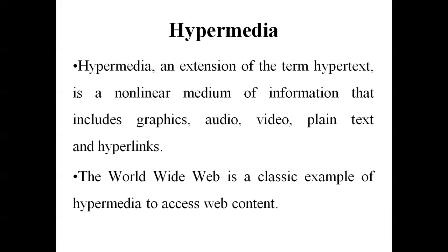Hypertext involves only text with hyperlinks, whereas hypermedia is an extension of hypertext — it is a non-linear medium of information that includes graphics, audio, video, plain text, and hyperlinks. Hypermedia is an approach to building information systems made up of nodes of various media such as text, audio data, video data, etc. The best example is the World Wide Web.